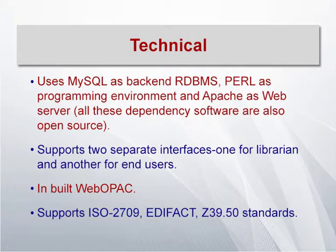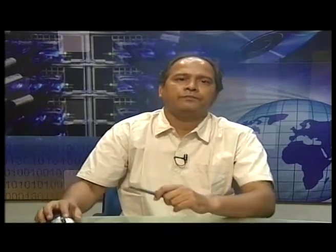Koha is based on LAMP architecture — MySQL as back-end RDBMS, Perl as the programming environment, and Apache as web server. All dependent softwares are also open source. It supports two separate interfaces: the staff or librarian interface and the Koha OPAC. It supports almost all globally agreed bibliographic standards — ISO 2709, MARC XML, EDIFACT, Z39.50 — and present versions are also compatible with NCIP (NISO Circulation Interchange Protocol). This is a tremendous advantage compared to other Indian library automation systems.